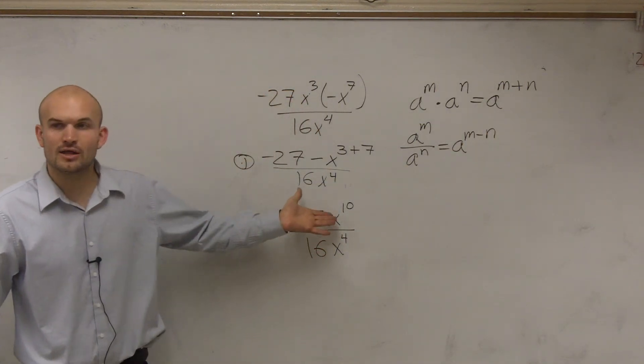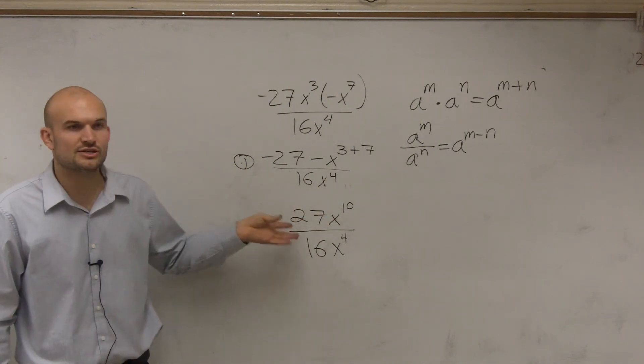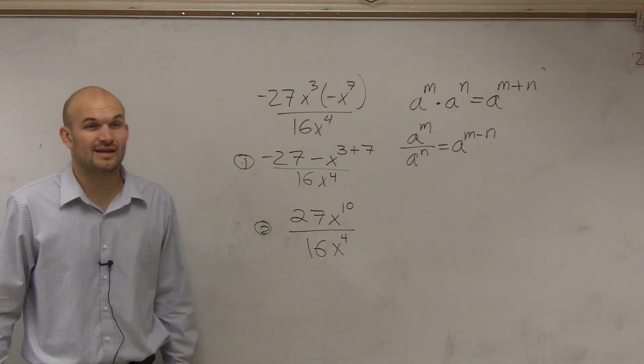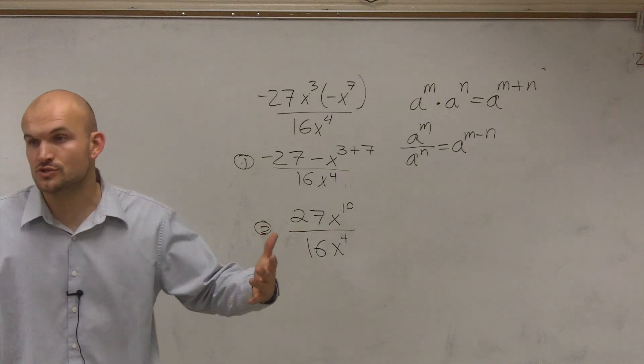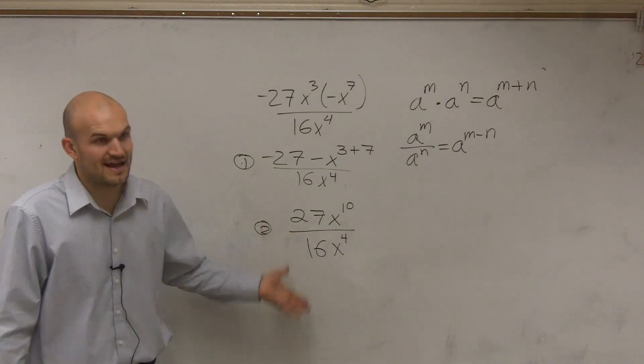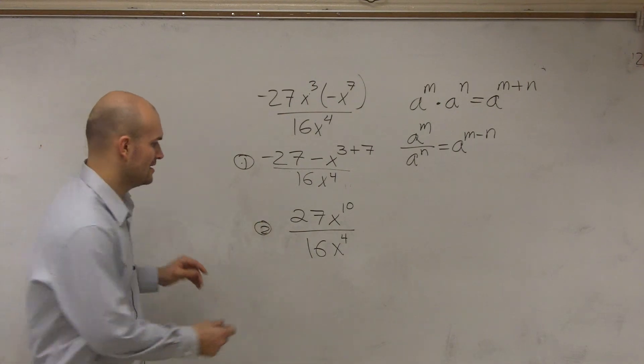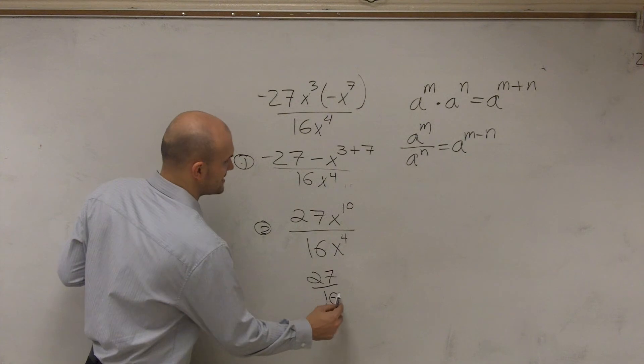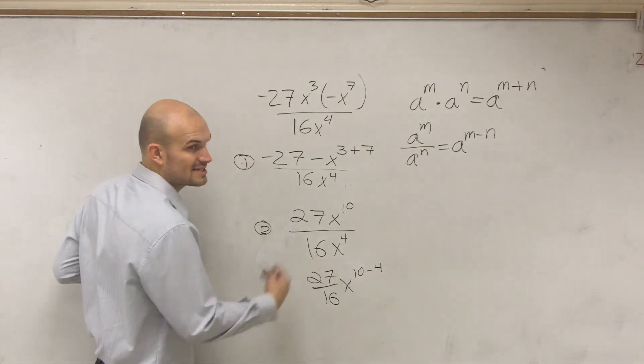So in this form, all I have is now, before we get any farther, can we reduce 27 divided by 16? Can't even simplify that, right? Sometimes you can simplify like 4 divided by 8, we reduce as 1 half. But this, do they have any terms that go in common? No. So we're just going to leave it as 27 over 16, and then x to the 10 minus 4, which is x to the sixth.